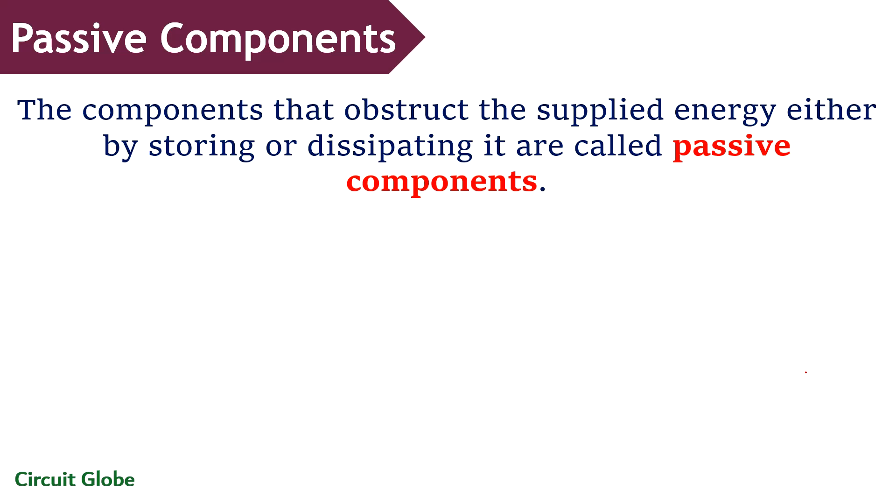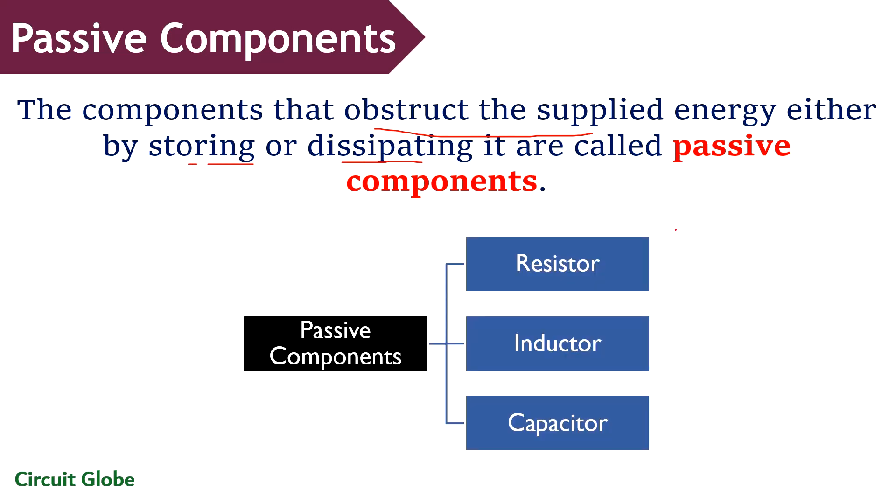Passive components are the ones that hold the ability to attenuate the supplied electrical voltage or signal and cannot amplify it. Passive components obstruct the supplied energy, either by storing it or dissipating it. The various passive components are as follows: resistor, inductor and capacitor. Let us now understand each passive component separately.